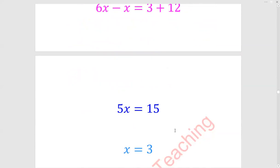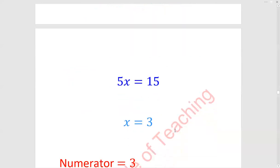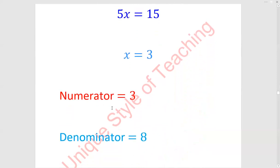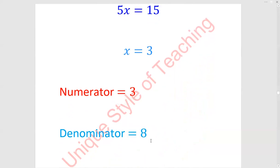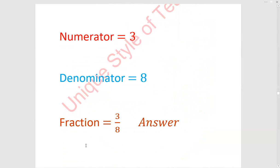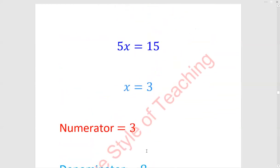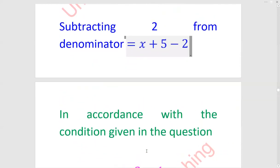Next find x by dividing 5 to the other side. It will be 15 divided by 5, the answer will be 3. x is 3. Now you know that the numerator of that fraction will be 3 and denominator will be 3 plus 5, which is 8. So the fraction is 3 upon 8. This is our desired fraction.